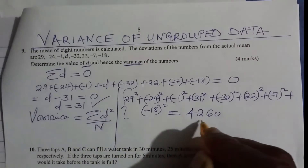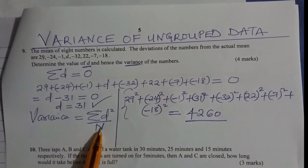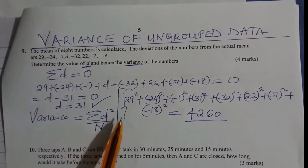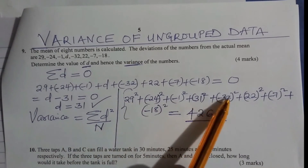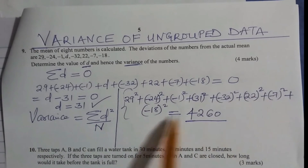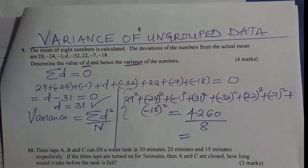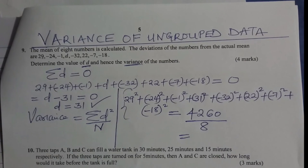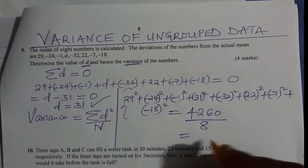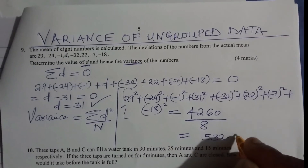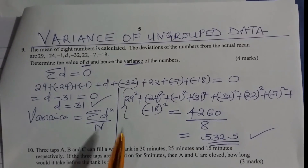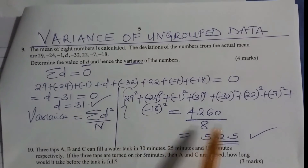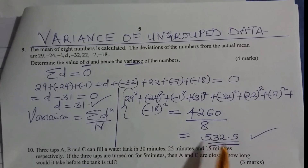Then we divide by N. N is the total number of values — there are eight values. So we divide 4260 by 8. That gives 532.5. So that is how you find the value of D and the variance of this type of data.